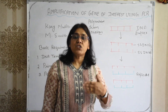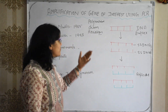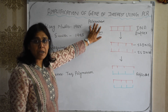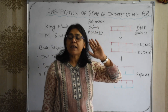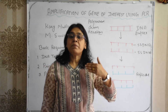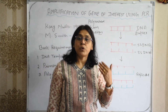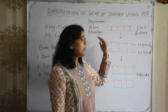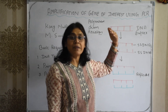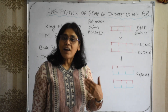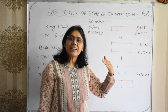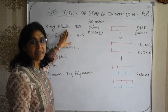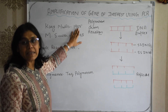PCR is essentially in vitro replication of DNA. The enzyme used is polymerase, which polymerizes deoxyribonucleotides and is therefore very important for the synthesis of a DNA strand. The idea of PCR was originated in the early 70s but it was made a reality by Kary Mullis in 1985.